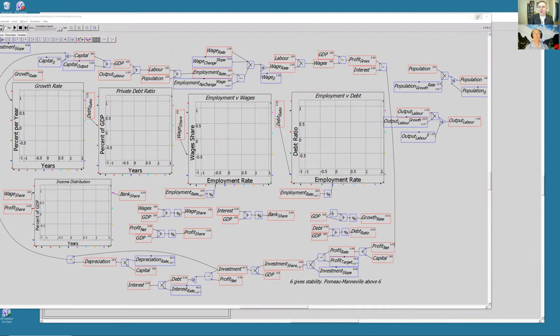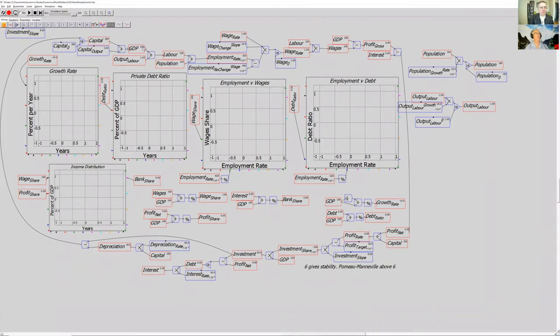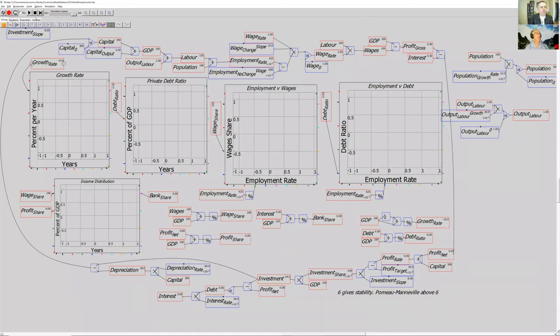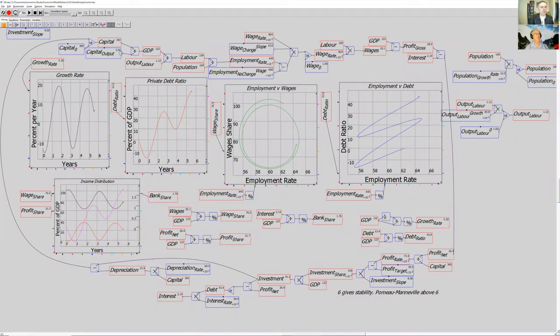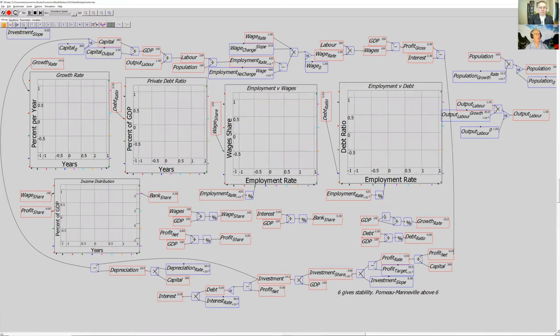This is a model of Minsky's financial instability hypothesis done in the software I've invented called Minsky. I'll show a very quick simulation. The basic logic says the amount of machinery you have installed determines output, which determines employment, which is the employment rate, which determines the rate of change of wages, which gives you the wages bill, which you subtract from GDP as well as subtracting interest to work out what profit is, which gives you the profit rate, which shows the investment share, which gives you how much investment occurs, which comes back and gives you the amount of capital.